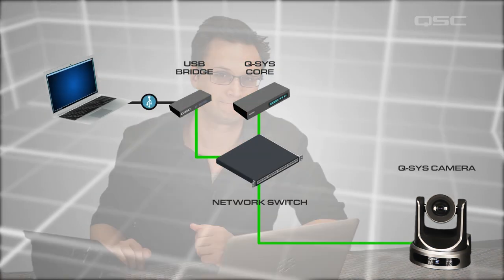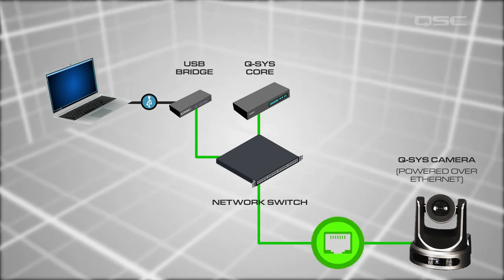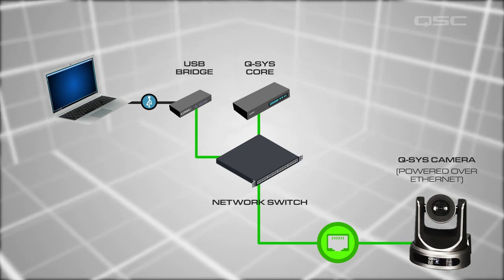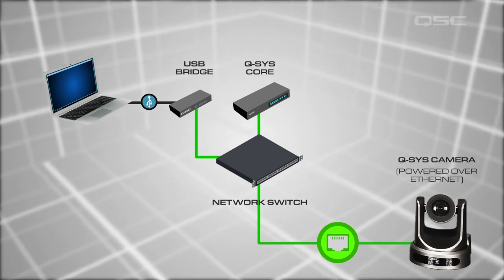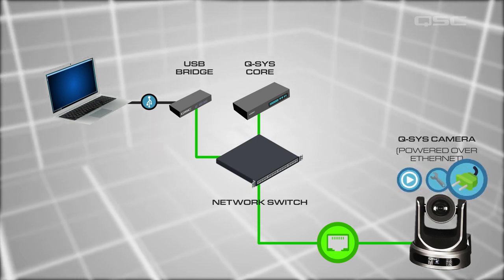Meet the Q-SYS camera — the PTZ2060. The camera is a Q-SYS peripheral, which means that all of its control is built into the designer software. You can take all of those control buttons and put them on the same touch screen device that you're already using to manage all the audio in the room. Plus, it's a POE device, meaning it's powered by a single Cat5 cable. That means your installer is only running a single cable in the room from the camera to the network switch — that one cable sends the video, control, and power.